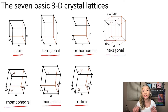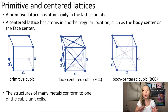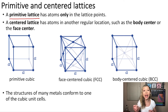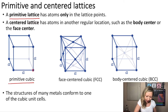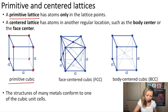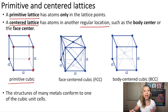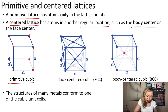But let's jump back to the cubic crystal lattices. We are going to distinguish between primitive lattices, in which we only have atoms in the lattice points. When we have a primitive cubic lattice, we are going to have eight atoms in the lattice points connected with the lattice vectors. We can also have so-called centered lattices, which have atoms in other regular locations, such as the body center — literally in the middle of the cube — or the face center, the centers of the faces or sides of the cube.